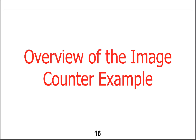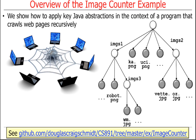Let's talk about some quick examples. First, an overview of the image counter example. What it does is basically give you a way to crawl a website starting at a root point. Every time you visit a web page, it does two things: it counts the number of images accessible directly through that page, and for all the hyperlinks on that page, it recursively visits those hyperlinks — which could be on the same page or somewhere else on the web — and counts the images accessible there.